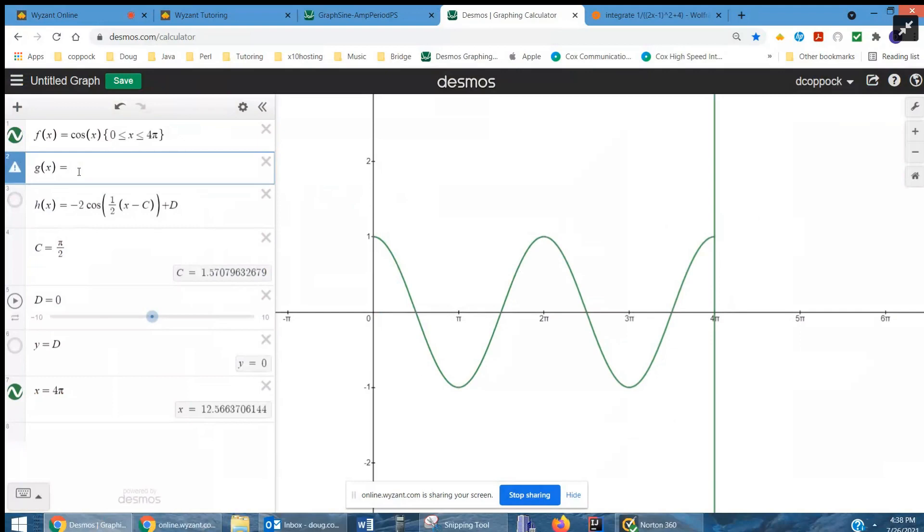Now let me say that g is the cosine of x, also from zero to 4π.